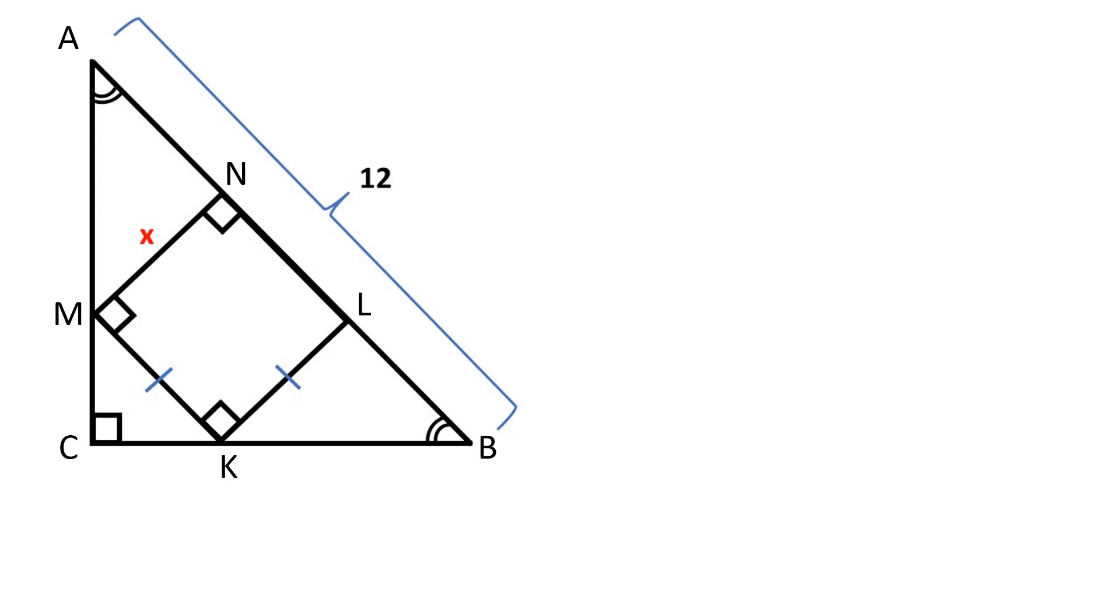Let's solve this problem. MNLK is a square, all sides are equal, all angles are equal to 90 degrees.